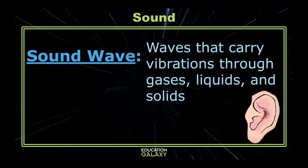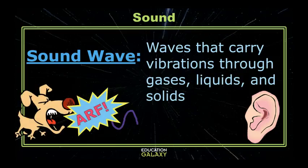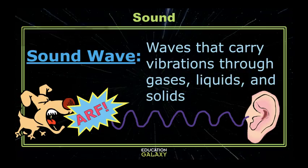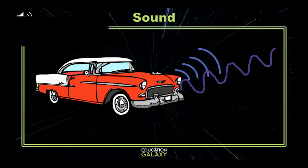Sound vibrations travel in waves. So when something makes a sound, like a dog barking, the sound wave is made and travels towards your ear. Sound waves are the patterns that are caused by these vibrations. Let's say you honk your horn — the movement of the air coming out of the horn creates a vibration of the air particles, and those vibrations move outward in sound waves.